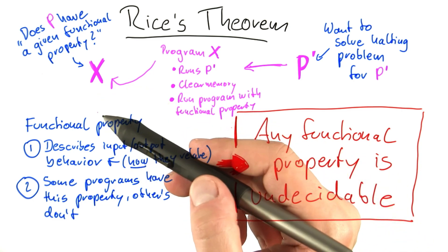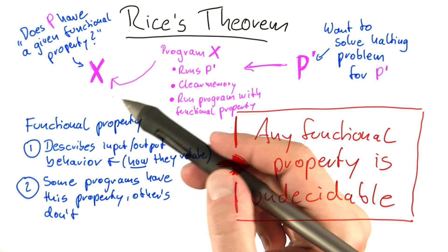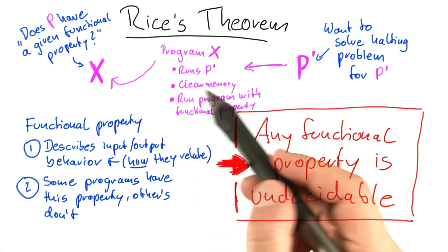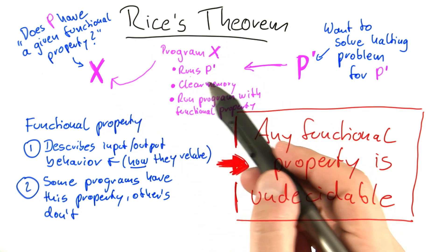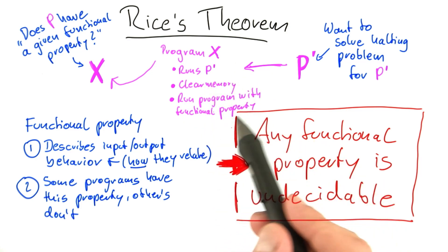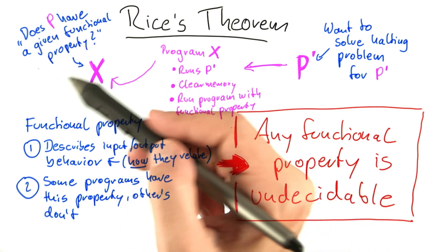This is also the reason why time is not a functional property. That would kind of destroy the proof of Rice's theorem. But if time is not an issue, then as long as p prime finishes, the program x will have the functional property that we can decide here.